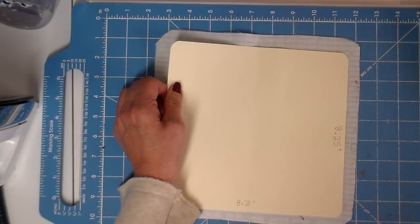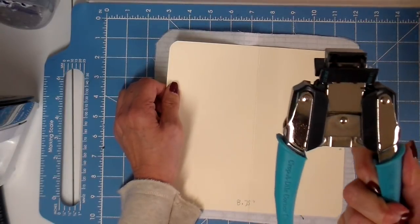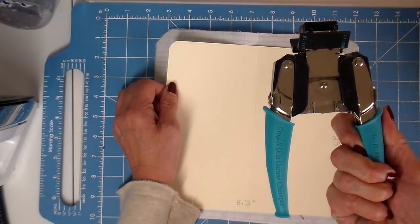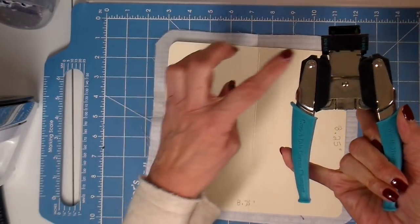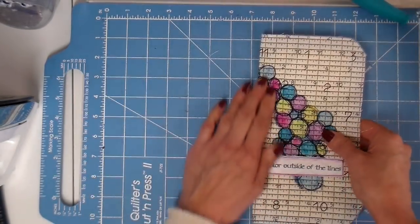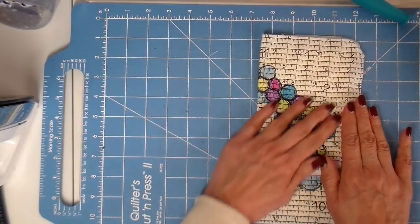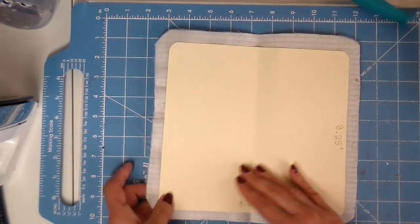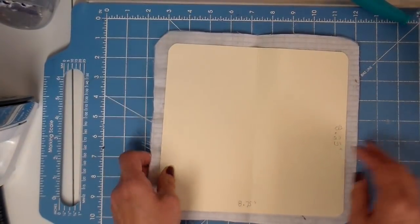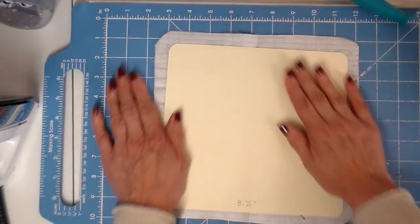And I use the half quarter round. And this is just the Crop-A-Dile corner chomper. And I use the half inch. I notice that this is printed not quite straight. So it's going to be a little bit off. Getting it as close as I can.